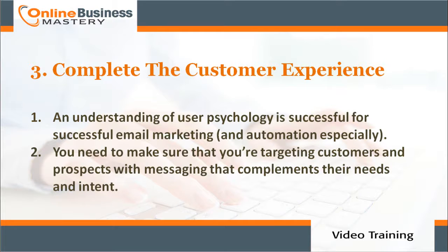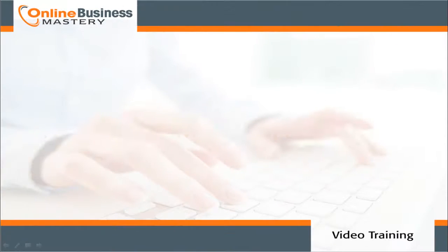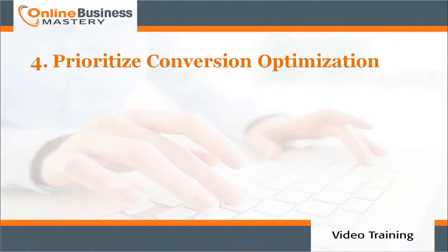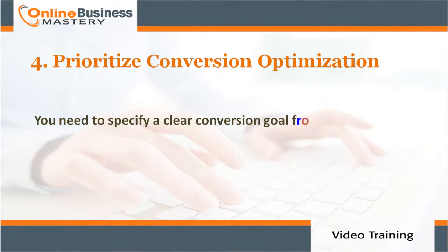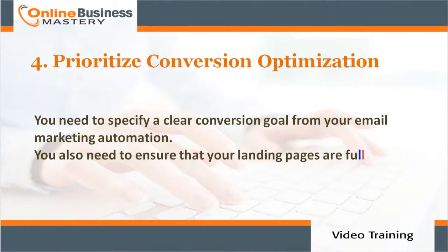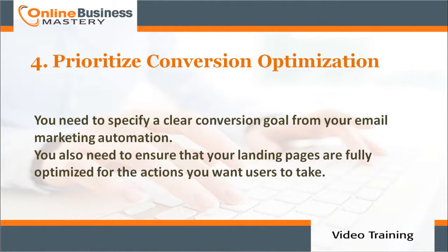You need to make sure that you're targeting customers and prospects with messages that complement their needs and intent. Number four, prioritize conversion optimization. You need to specify a clear conversion goal for your email marketing automation.